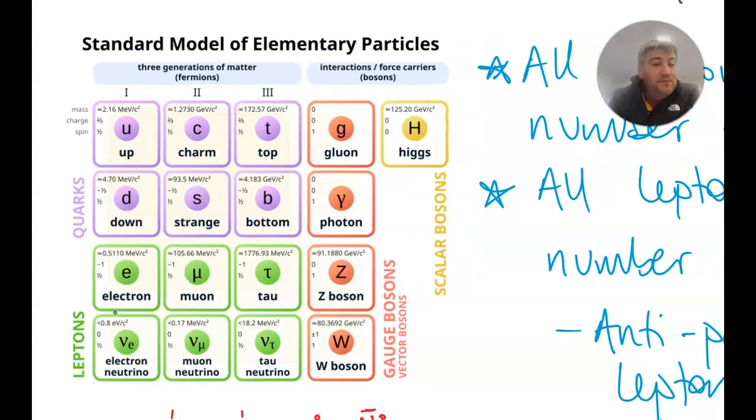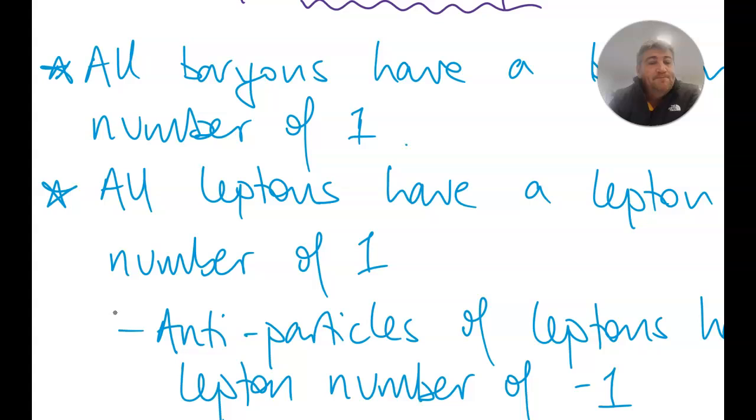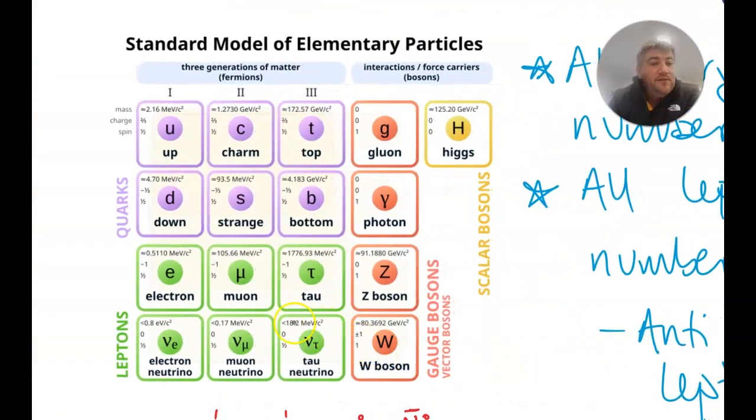So now we need to start following the rules that the standard model puts in place. So all baryons have a baryon number of one. All leptons have a lepton number of one. And all the antiparticles of those leptons have a lepton number of minus one. So for instance, a muon is a lepton, so it's got a lepton number of plus one. Its charge, negative one, but it's got a lepton number of plus one. An antimuon would have a charge of plus one and a lepton number of minus one. A tau neutrino has a lepton number of one, a charge of zero. An antitau neutrino would have a lepton number of minus one and also a charge of zero.